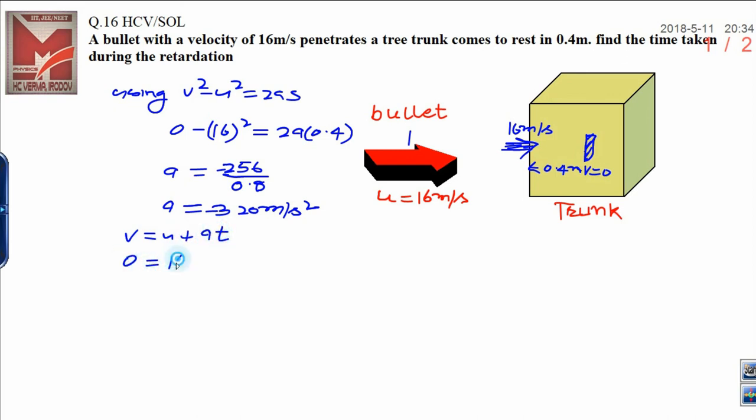u is 16 plus acceleration is minus 320 into t. Time can be calculated, time is equal to minus 16 upon minus 320. Solve it, that will be 1 upon 20, 1 upon 20 is 0.05 second.